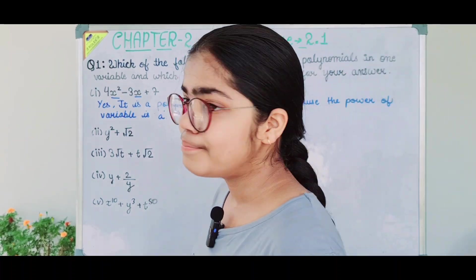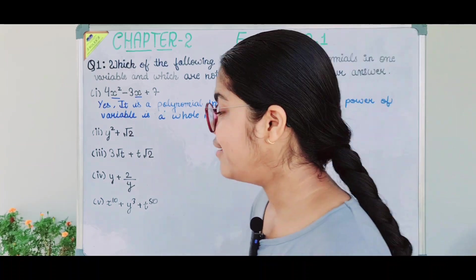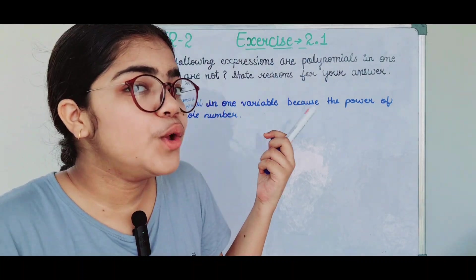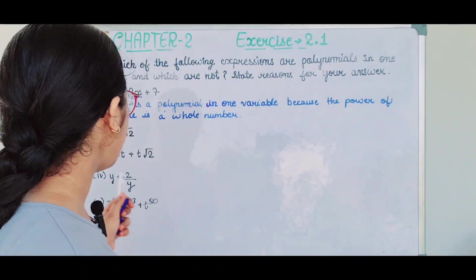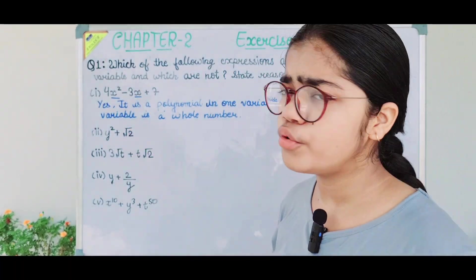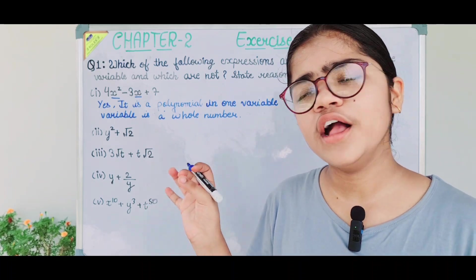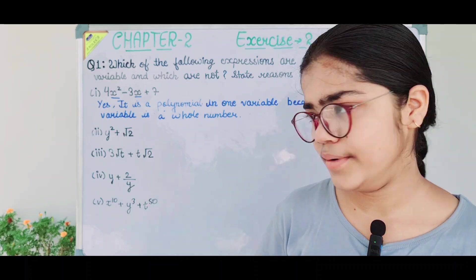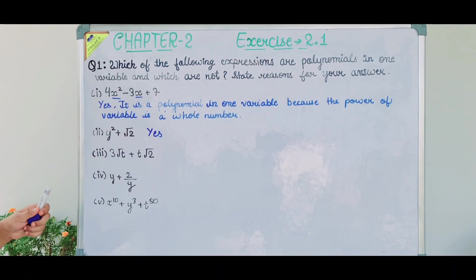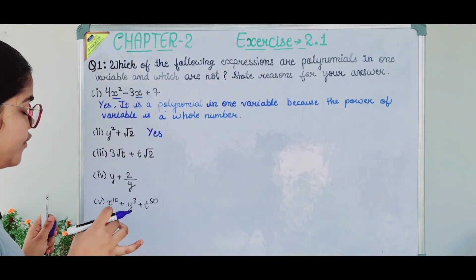The second part is y² + √2. Now, what is the variable? Y. What is the power of y? 2. So this is a polynomial — it is a whole number because the power of the variable is a whole number.